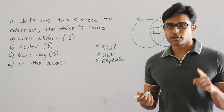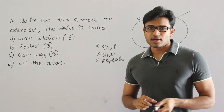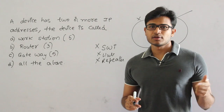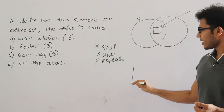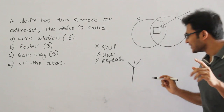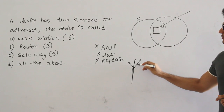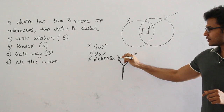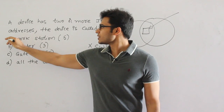Therefore, a workstation can have more than one IP address. How many IP addresses? That depends on how many interfaces you have. Generally, an IP address is assigned to the interface. When you buy a laptop you will get at least two to three interfaces, and every interface can be given one IP address. Sometimes there is a concept called virtual interfaces — even though you have only one NIC, you can create many virtual interfaces, and for each interface you can give one IP address. So workstation can have more than one IP address.